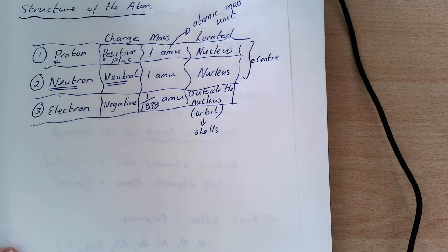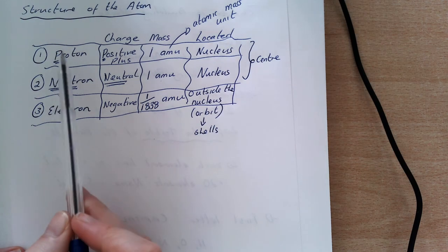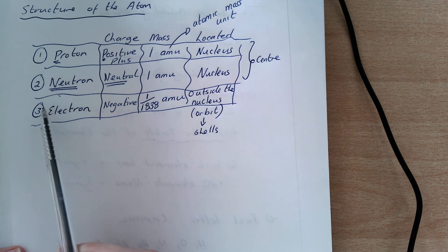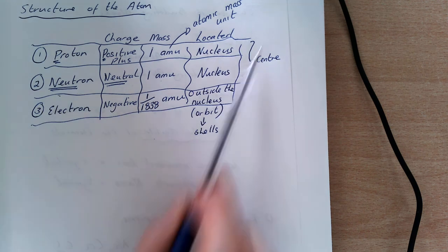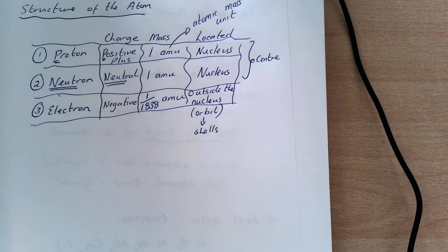We will be coming back to how we work out the number of protons, neutrons, and electrons in every single atom. But first, you need to learn this table. Proton has a positive charge with a mass of one located in the nucleus.